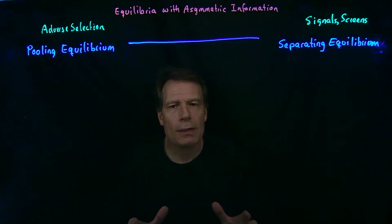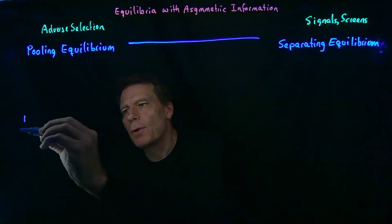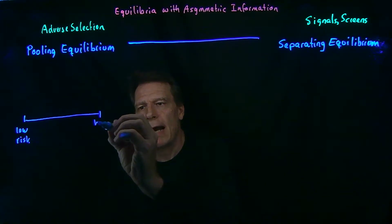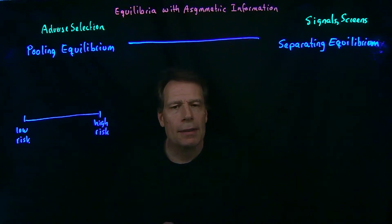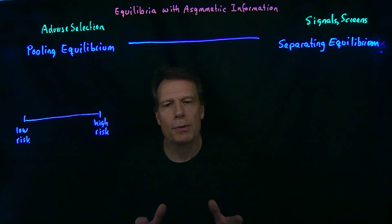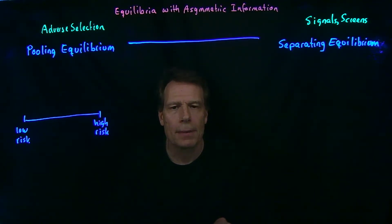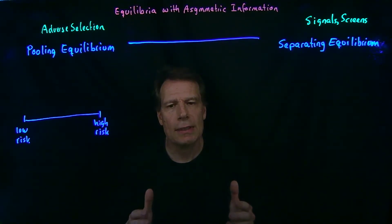Let's make this more concrete by going back to our example of unemployment insurance. We've already talked about the adverse selection problem in that market. We lined people up from those who are at very low risk of losing their job to those who have a very high risk. The insurance company implicitly has no idea who you are when you apply — no idea where you fall on this continuum. So in a pooling equilibrium, no information is revealed and everybody gets treated equally, offered the same premium.